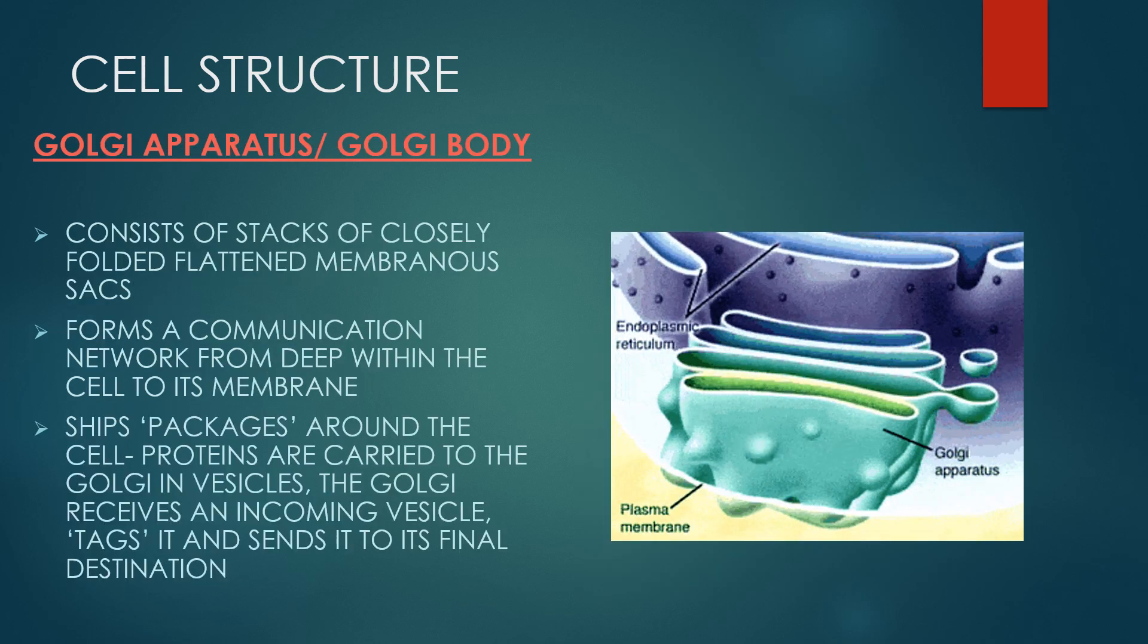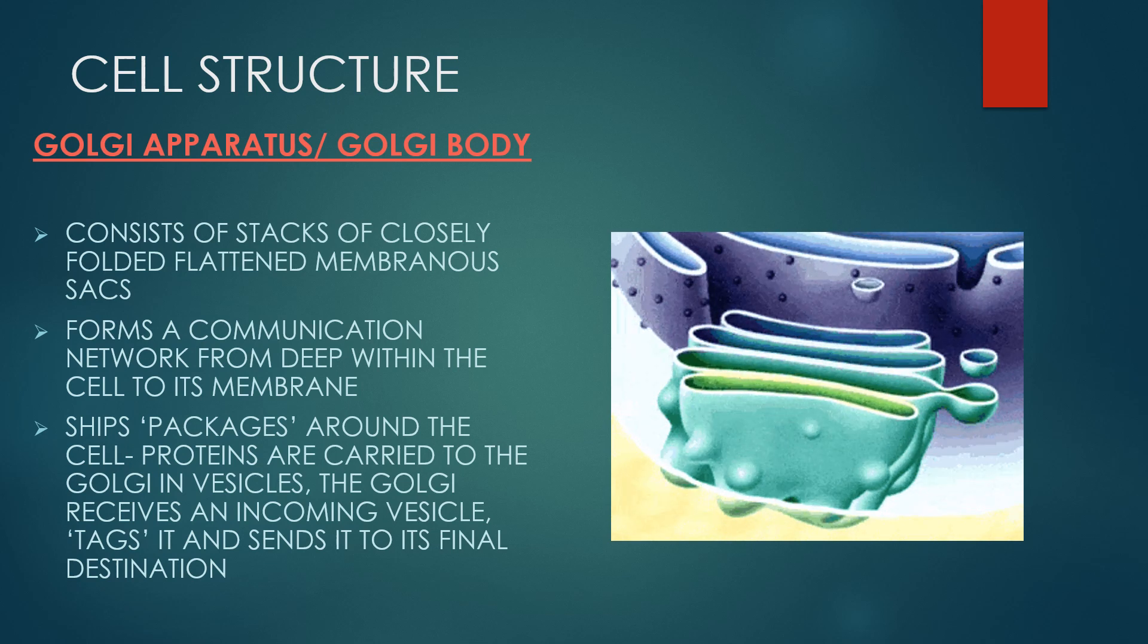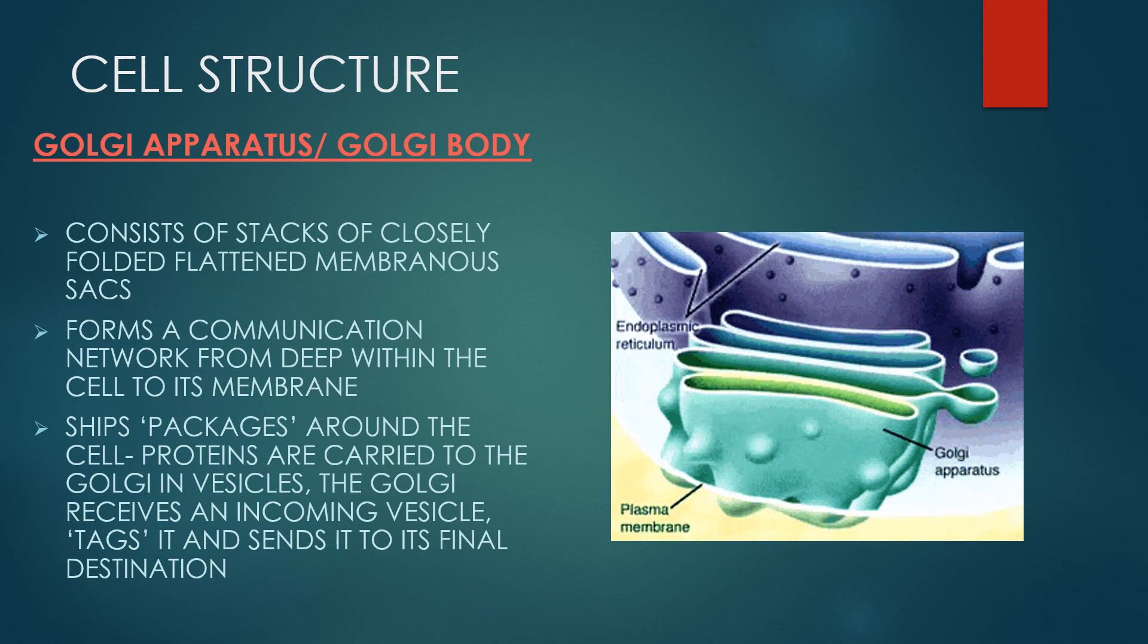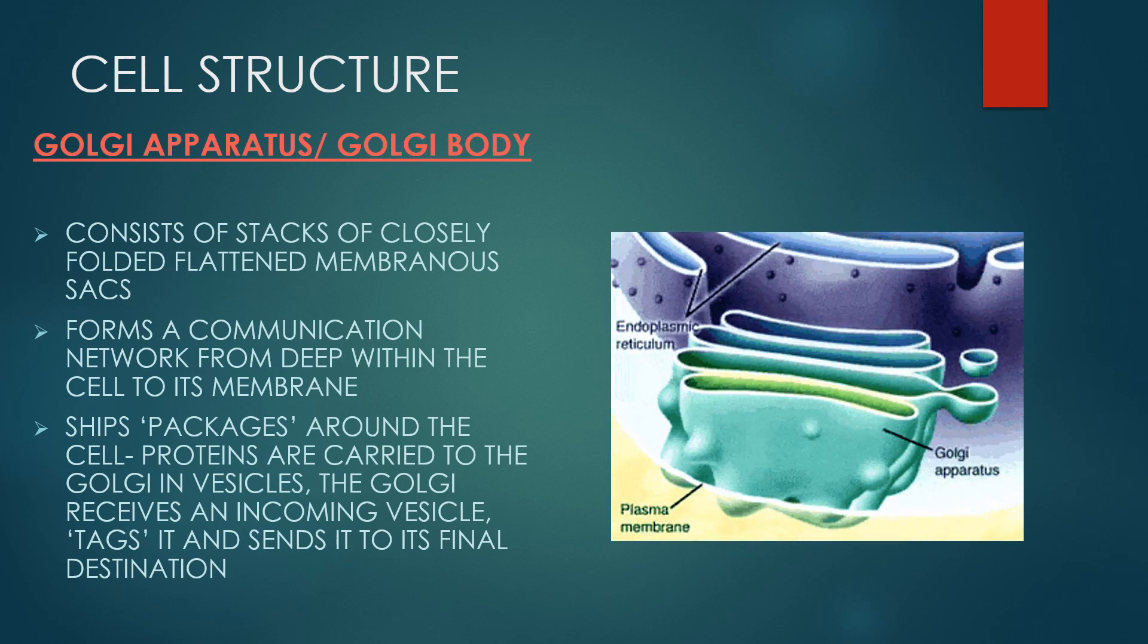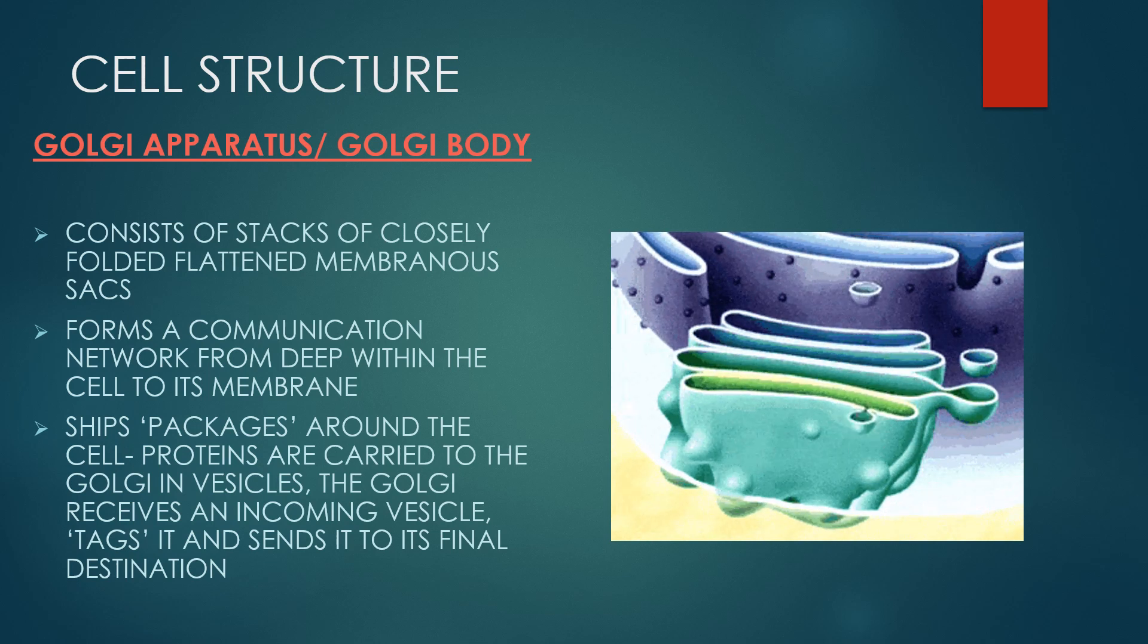A Golgi body also known as a Golgi apparatus is a cell organelle that helps process and package proteins and lipid molecules, especially proteins destined to be exported from the cell. It consists of stacks of closely folded flattened membranous sacs, forms a communication network from deeper in the cell to its membrane. It ships and packages the cell's proteins which are carried to the Golgi in vesicles. The Golgi receives an incoming vesicle, tags it and sends it to its final destination.